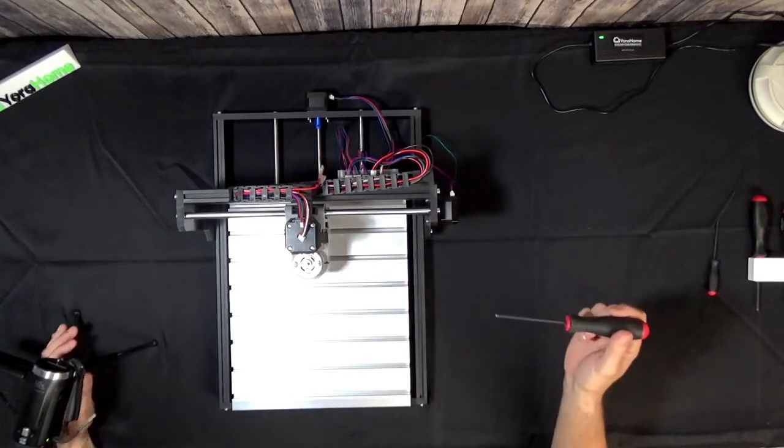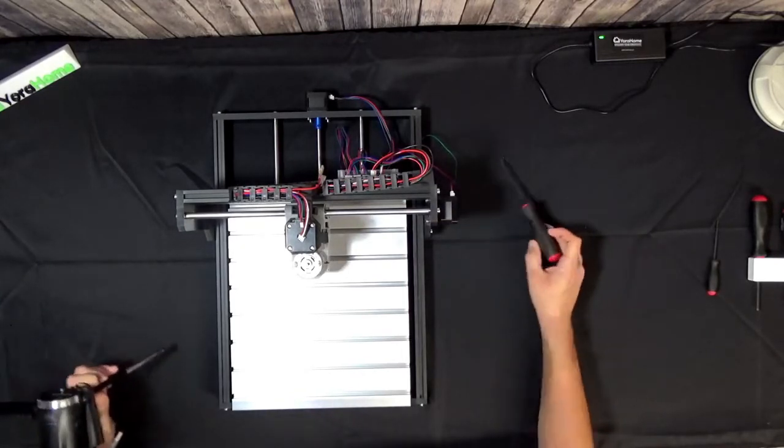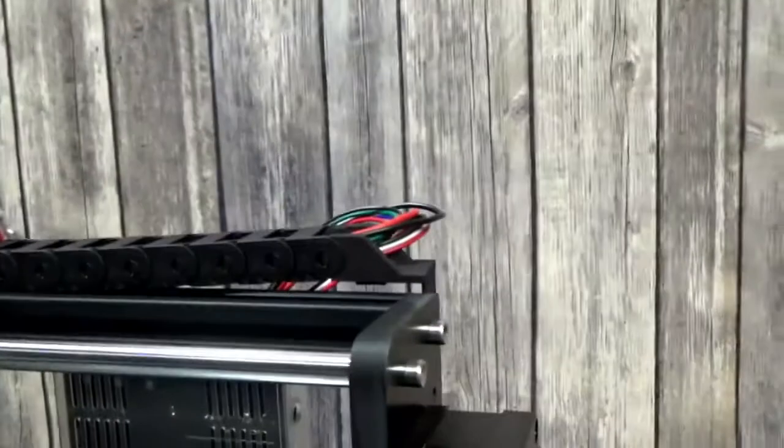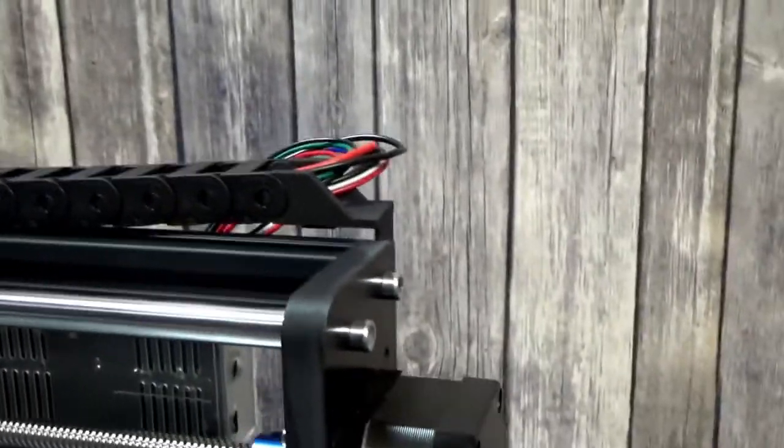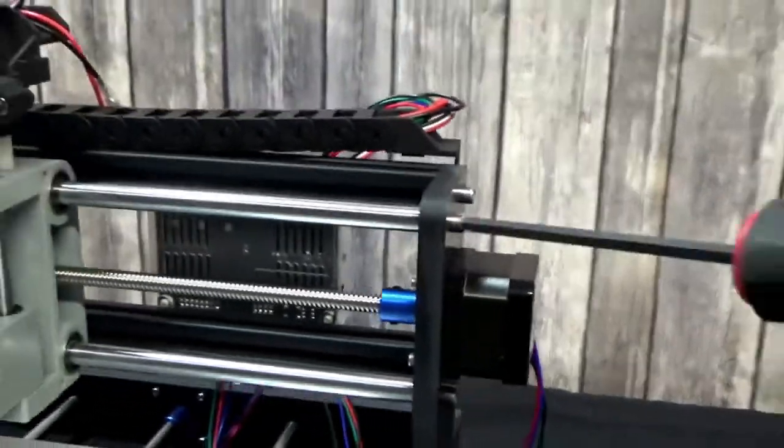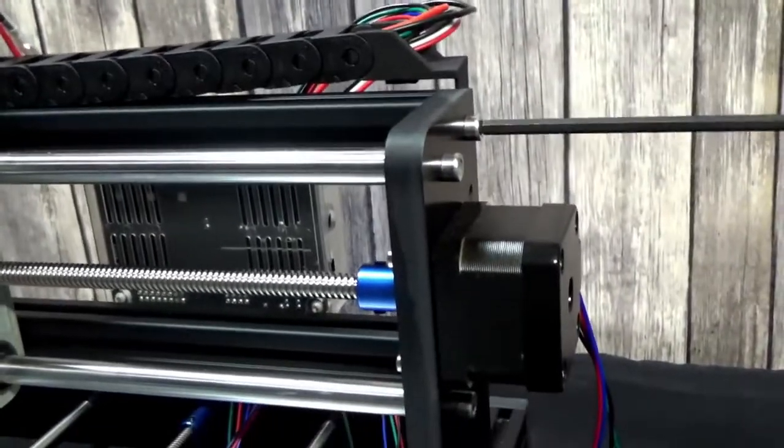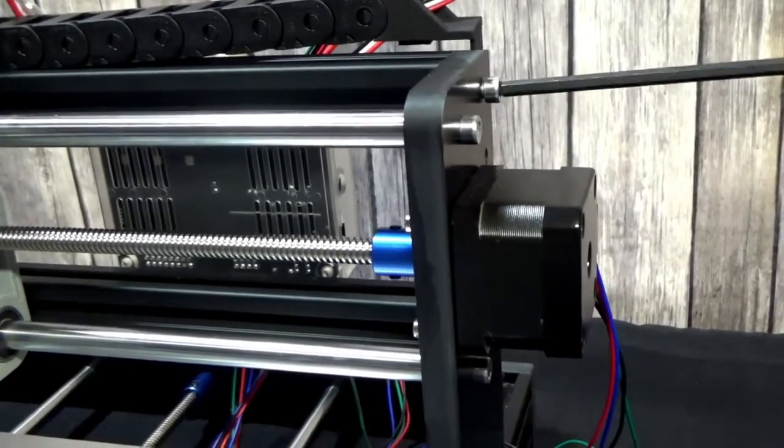Next you're going to want to disconnect the screw on the side. I will show you which one. So this is on the right side of the gantry, the rear one. You're going to want to unscrew that.